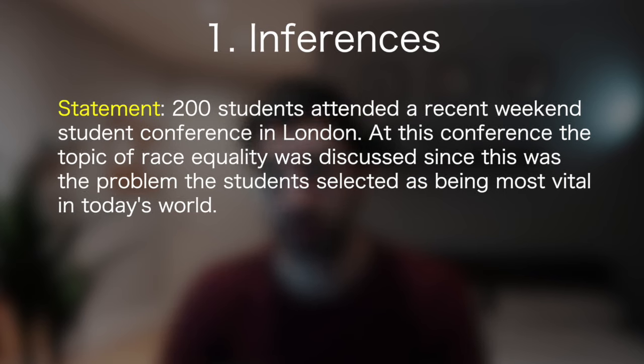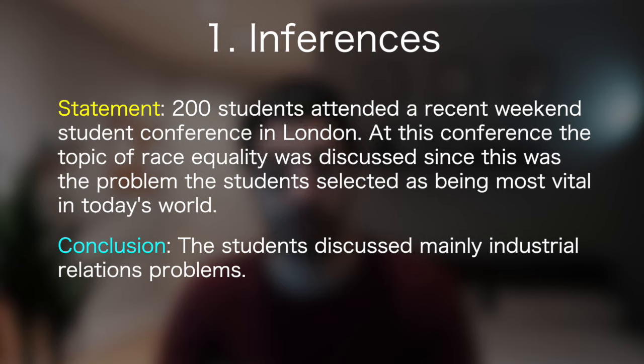In these questions, you'll get a statement and then a conclusion. The statement might be: 200 students attended a recent weekend student conference in London. At this conference, the topic of race equality was discussed since this was the problem the students selected as being most vital in today's world. The conclusion might be: the students discussed mainly industrial relations problems. What's important is that you have to accept what's given in that statement as a true fact, then say how likely that conclusion is to be true, assuming the facts in the first statement are all true. You're also allowed to rely on any common knowledge in this section.